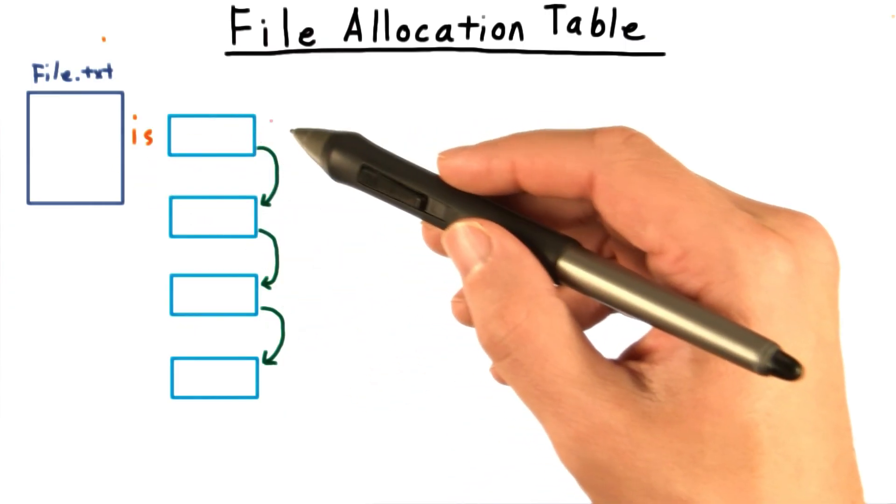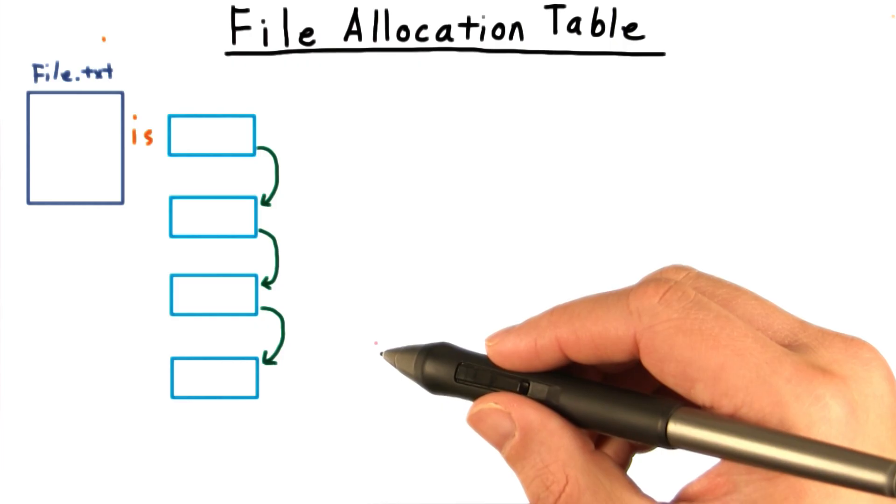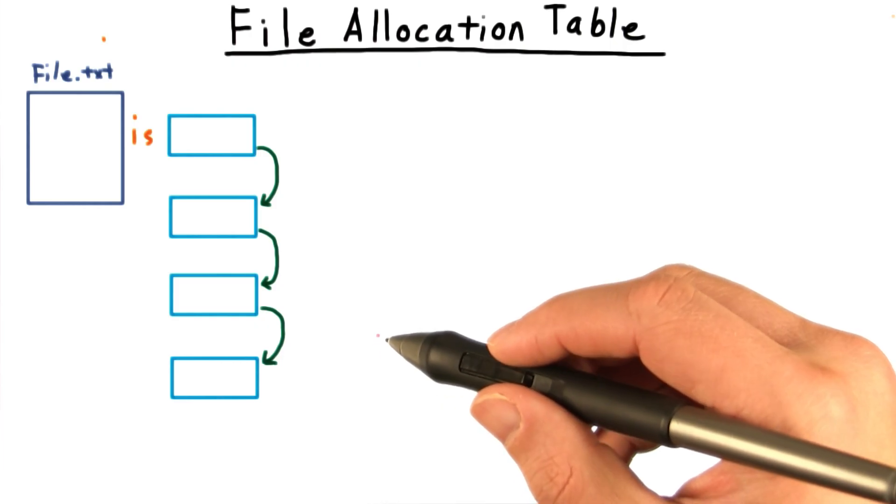The first is that each file is represented as a linked list of blocks. Normally, when we think of a linked list, we think of the links as being part of the nodes in the list.